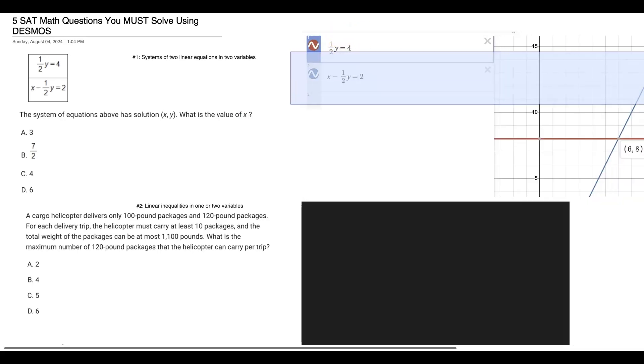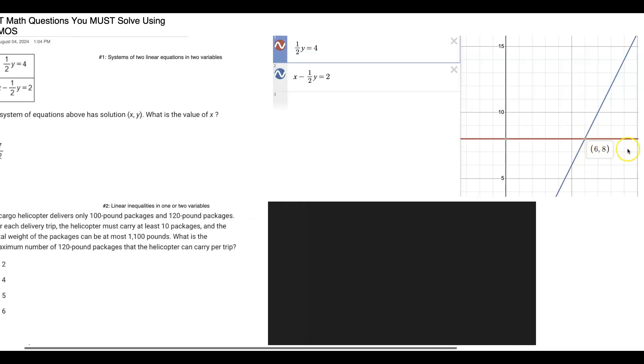We've just plugged in the equations right into Desmos. You can see over here it shows you the intersection, 6, 8, and so corresponding x, y, so x would be 6.